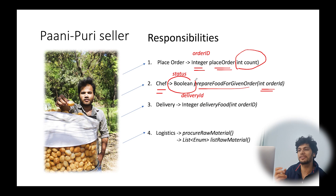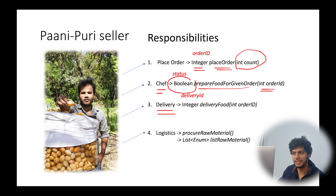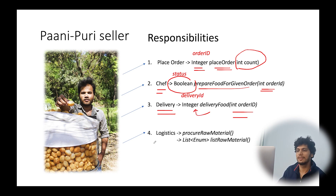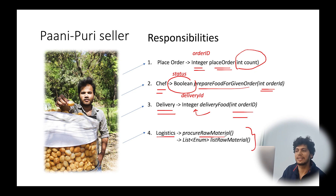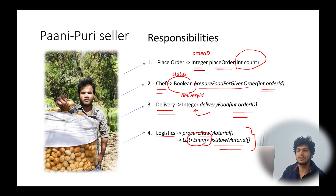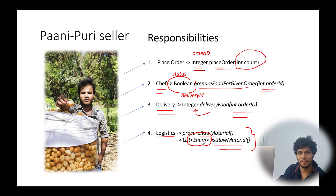The third functionality is delivery — it also accepts an order ID and returns a delivery ID back to the caller. The last responsibility is logistics, which exposes two methods: 'procure raw material' and 'list of raw materials needed.' This accepts a minimum value representing all raw materials needed by the bhaiya to prepare panipuris. I've kept this as simple as possible so you get a good hold of the concept.